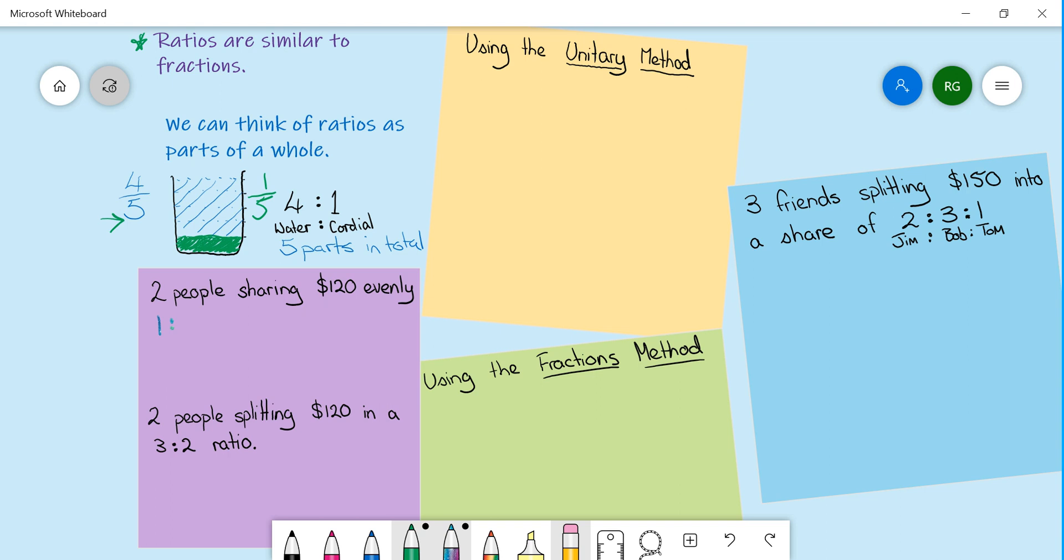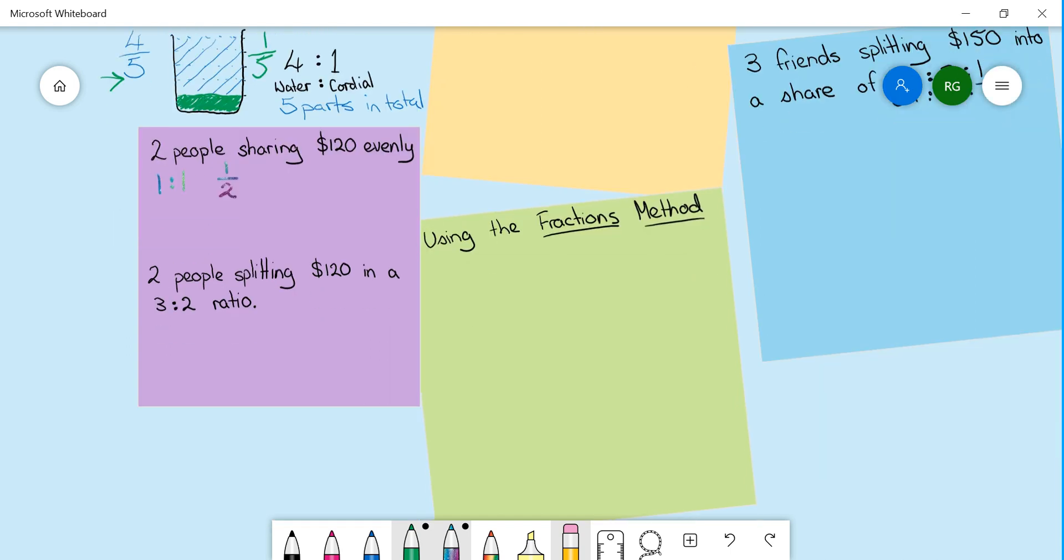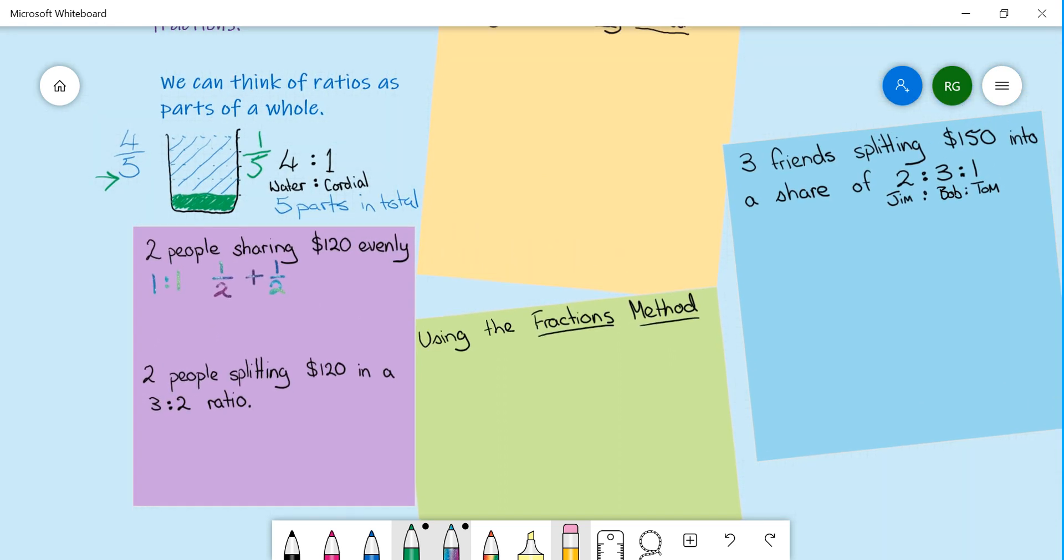If I have two people sharing $120, they're going to be in a ratio of one to one, which means in total there are going to be two parts. Each person in this scenario is getting one part out of two. So it's going to be one half plus one half. Which is going to be one whole.